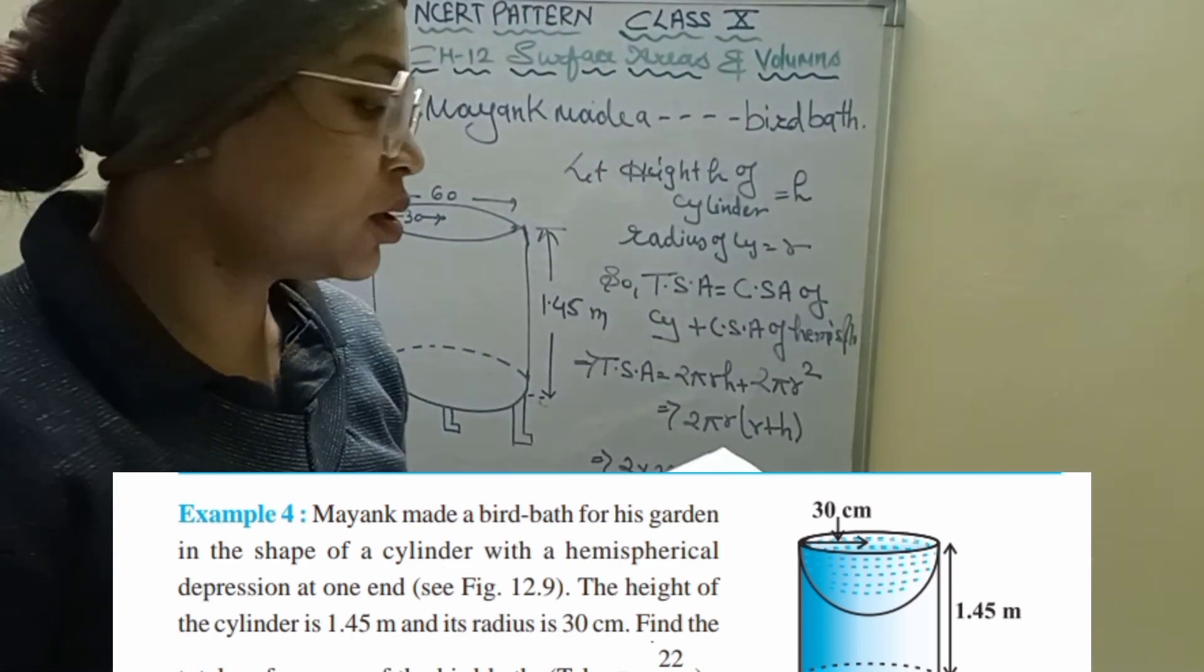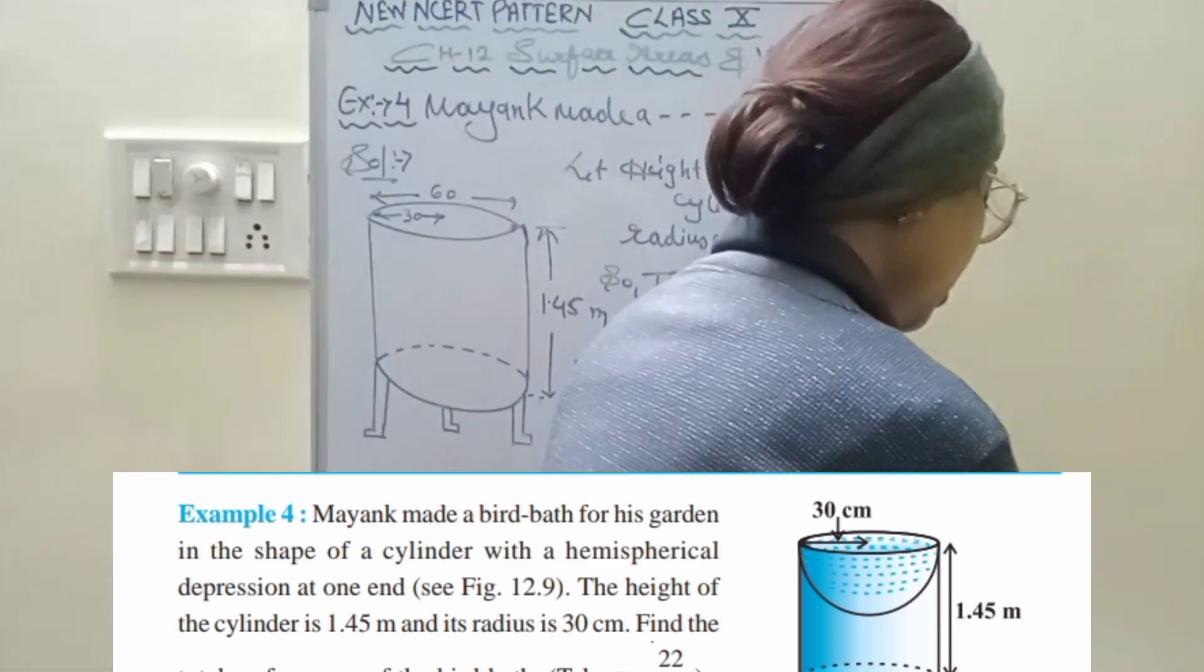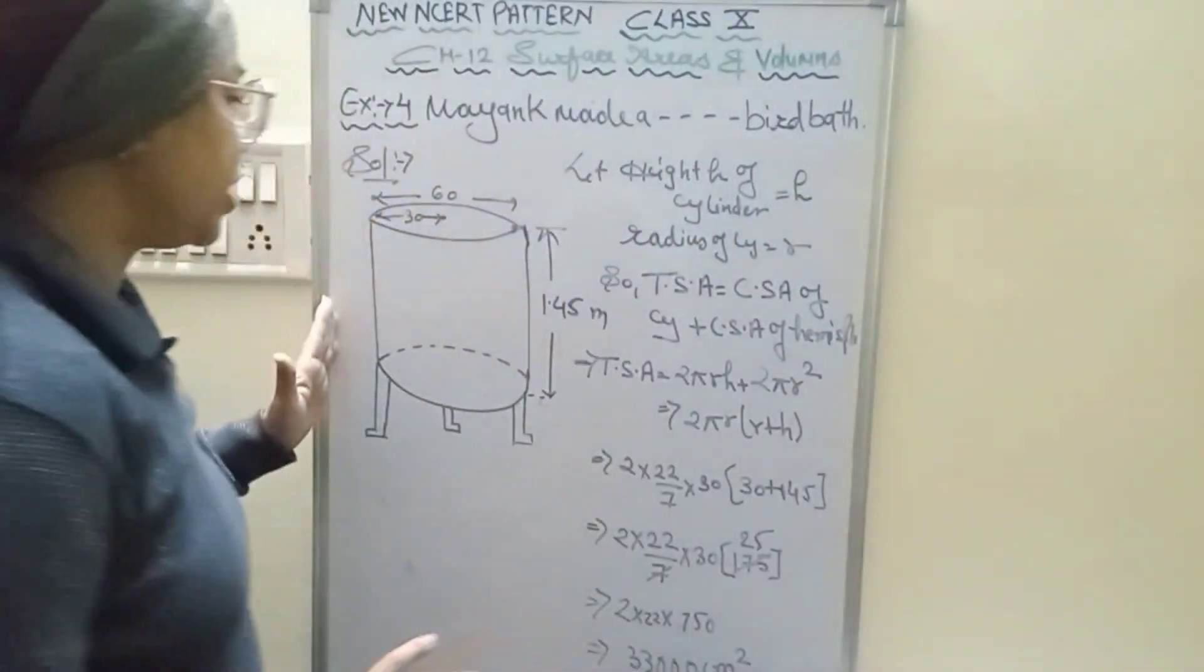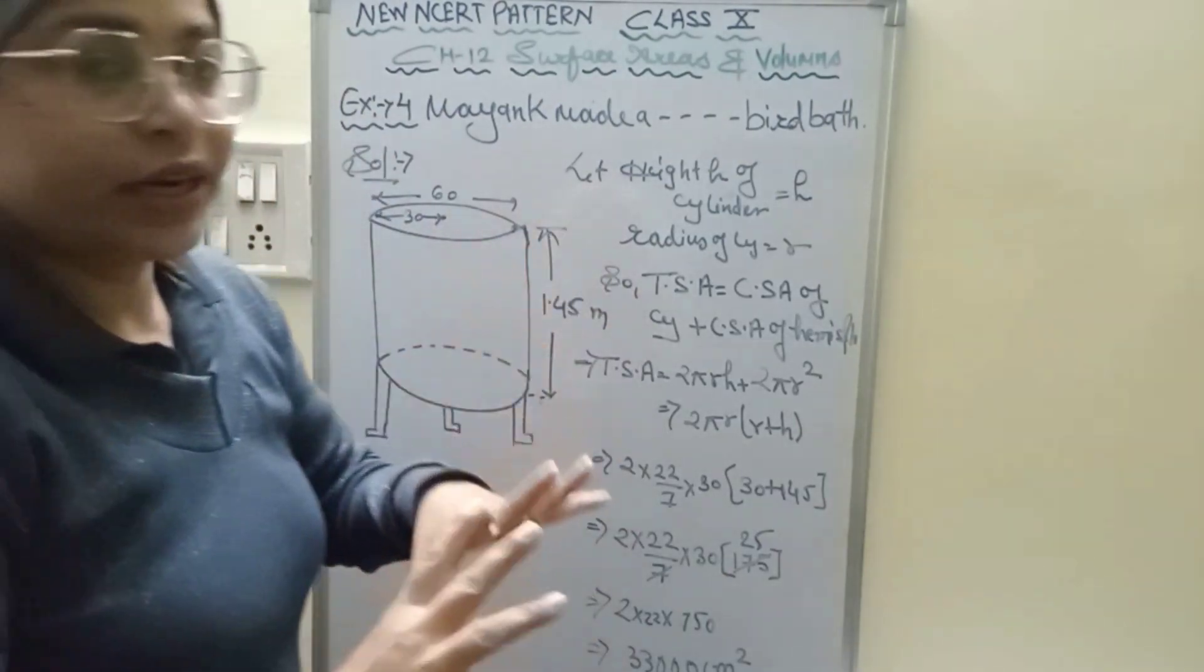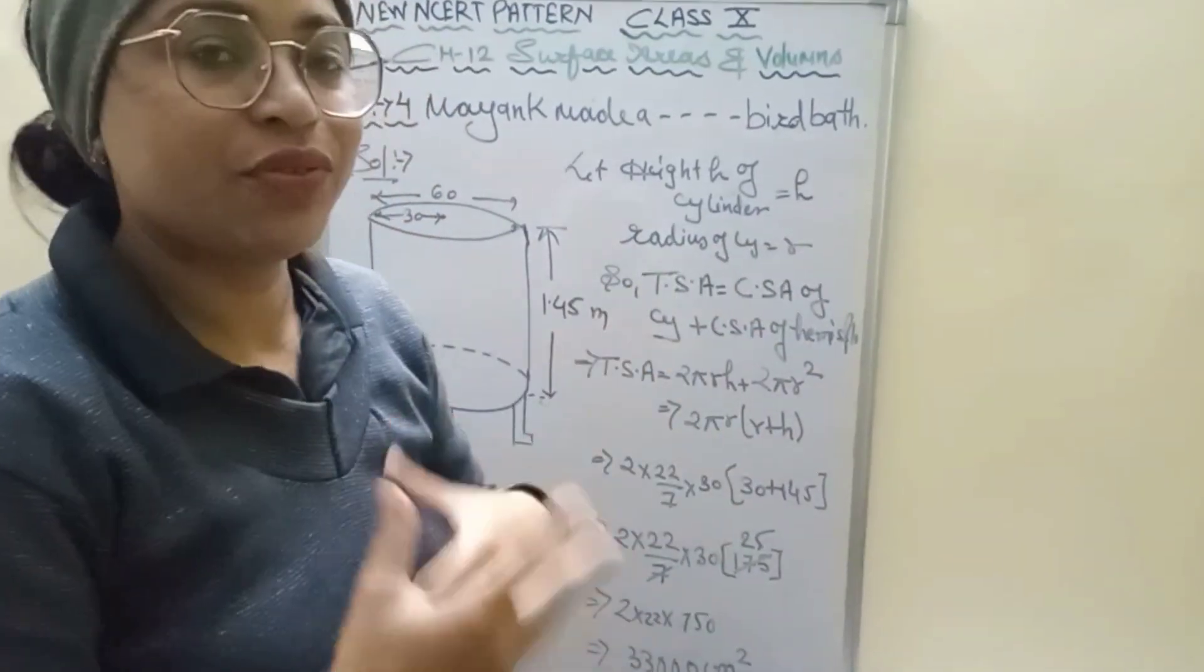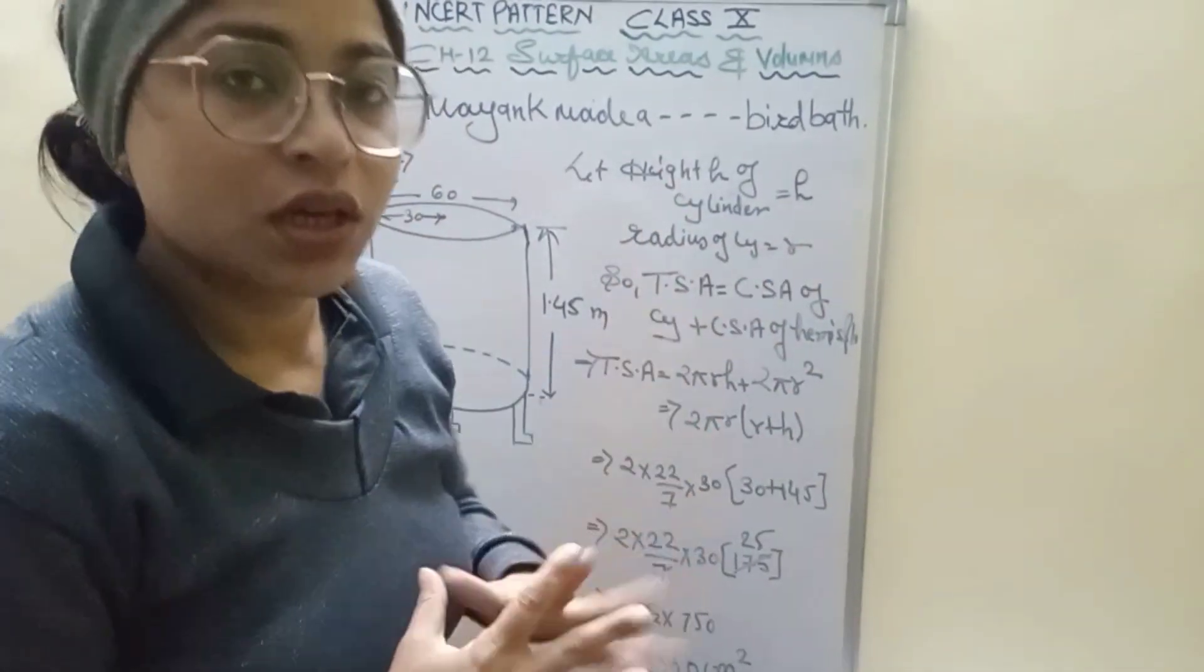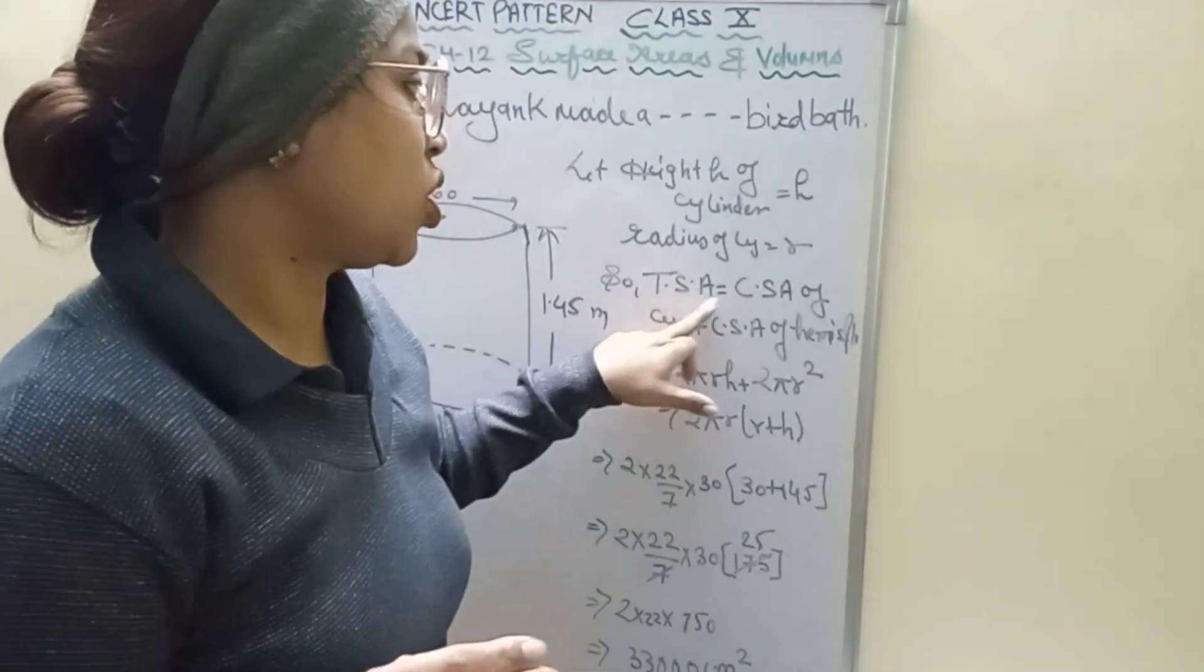We need to find out the total surface area of the bird bath. So the bird bath has a cylindrical portion and a hemispherical portion. Here the height is given, denoted by h, and the radius is denoted by r.